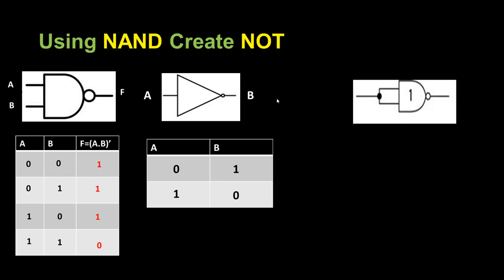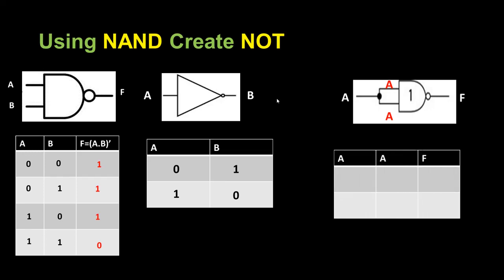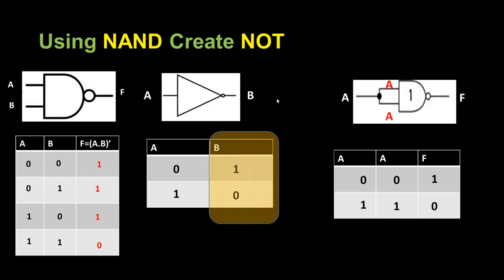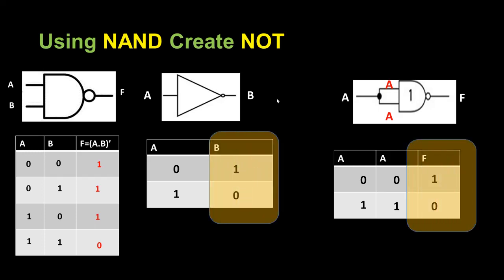In the NAND gate we have two inputs, so I connect both inputs together. If I put one input as A, then both inputs will be A. You get outputs of 1 and 0 respectively, and you can see both outputs are the same — this proves that using a NAND gate you can create a NOT gate.